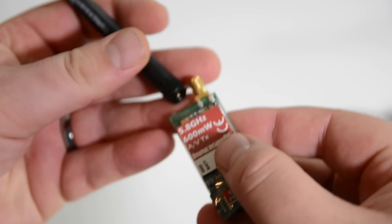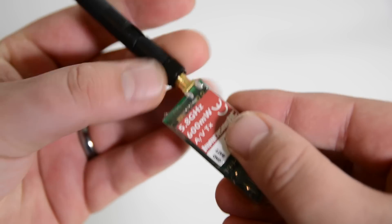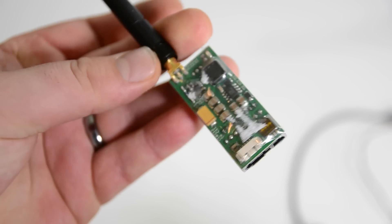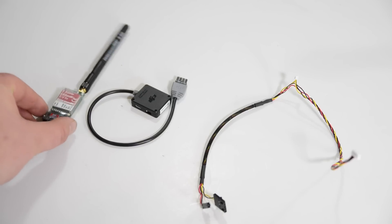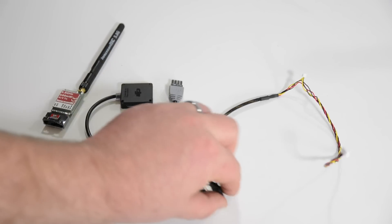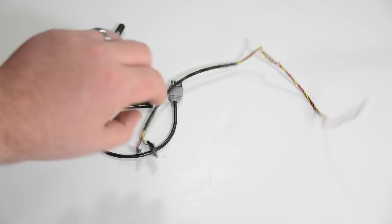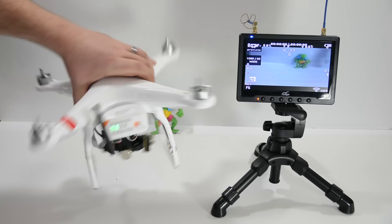Now there's different variations you could do to this, different transmitters that you could use. These are the parts that I'm using and this is the build I'm doing for my DJI Phantom 2. All the parts in this video will be down in the description so you can just go and click on those.